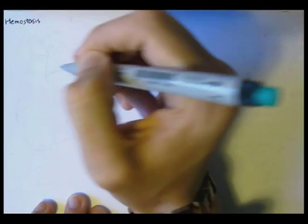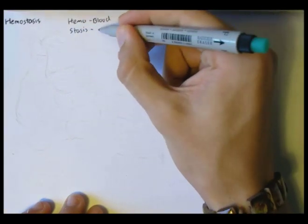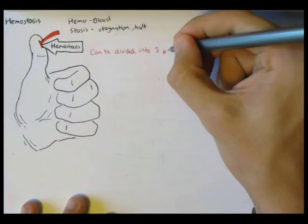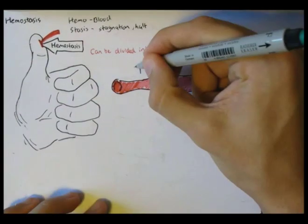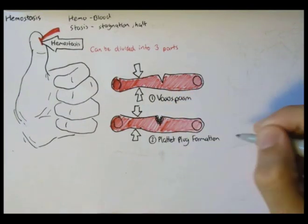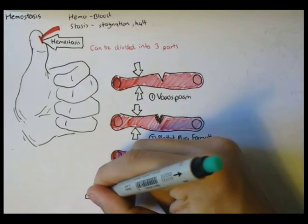Hemostasis is a process to stop bleeding and comes from the Greek word blood and stagnation. The process of hemostasis can essentially be divided into three major parts: vascular spasm or vasoconstriction, platelet plug formation, and finally coagulation. These three steps are important to know.